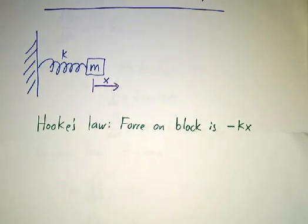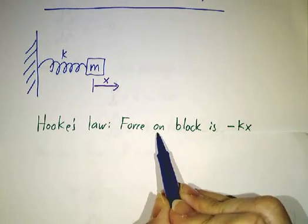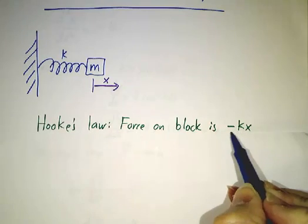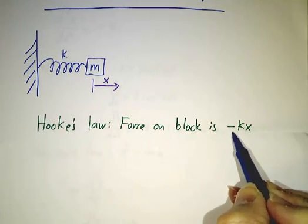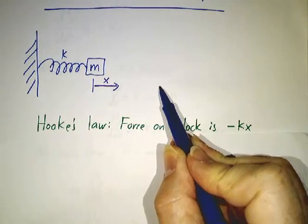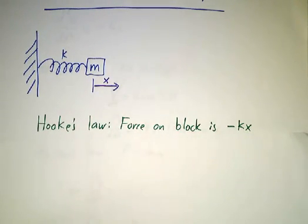Well, Hooke's law says that the force from a spring is proportional to how much you stretch the spring and it's pulling back towards the center. So if x is positive, you pull it out to the right, the spring is pulling things back to the left, so it's minus a constant times x.